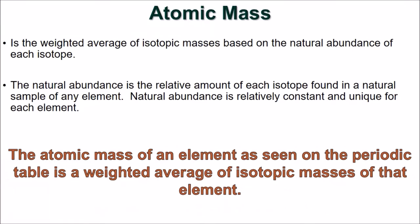The atomic mass of an element on the periodic table is the weighted average of isotopic masses based on the natural abundance of each isotope. The natural abundance is the relative amount of each type of isotope found in a natural sample of any element. The natural abundance is relatively constant for each sample and unique to each element.